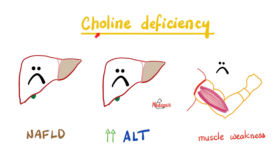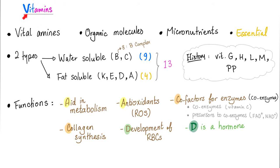Memory loss makes sense because choline in the body makes acetylcholine, which is a neurotransmitter. In the brain, acetylcholine has memory-related functions. That's why patients with Alzheimer's disease have low acetylcholine in the brain, particularly in the nucleus basalis of Meynert.